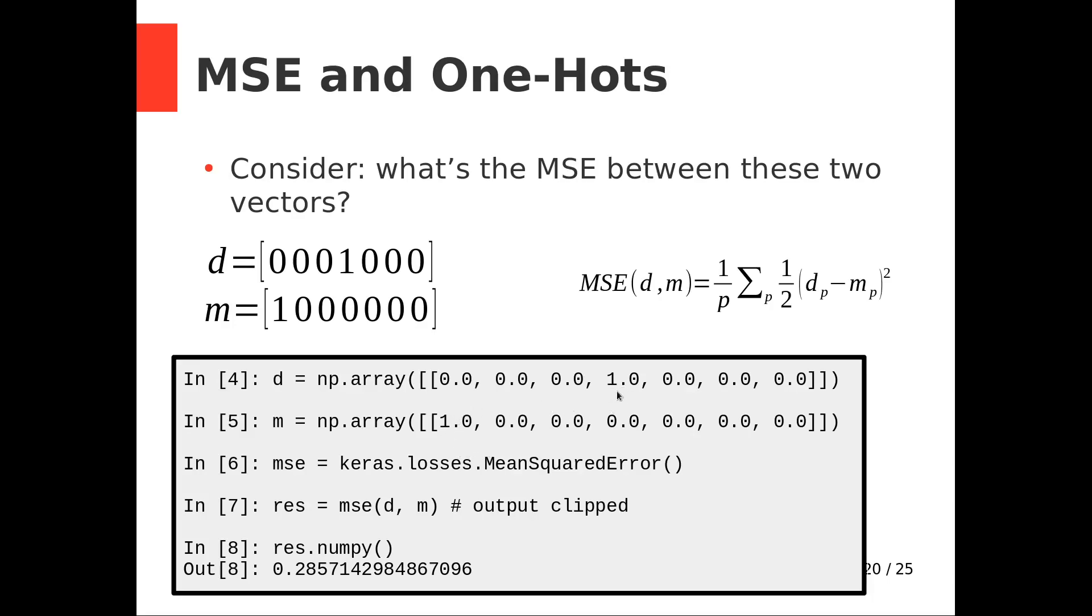But notice, if this is the desired output in terms of category, then we got the category 100% wrong. We wanted the network to 100% produce the fourth category, and it 100% produced the first one. So it got the category entirely wrong. So with MSE, with a seven category classification problem, when our network is completely wrong, an error of 0.28. That's not a lot.